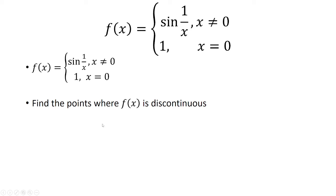Let's find out points where f of x is discontinuous. Note that sine of 1 over x is not continuous at x equals 0, because whenever you plug in x equals 0, you're dividing by 0. But everywhere else, it's continuous.